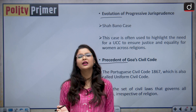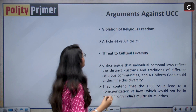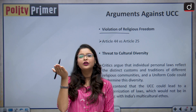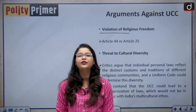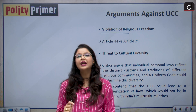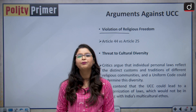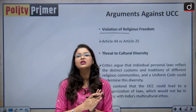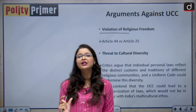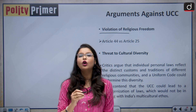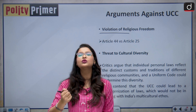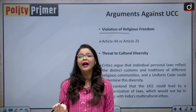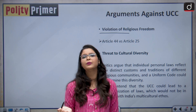Now let us see what arguments are raised against the Uniform Civil Code. The first argument is violation of religious freedom — critics argue that Article 44 is in violation of Article 25, which gives all citizens of India the right to freely practice, propagate and profess their own religion. However, this is not actually the case. What happened in the colonial era was that no religion wanted to lose their authority — neither the orthodox Hindus nor the Muslim clerics. That is why they associate UCC with religion so much, fearing they will lose their authority over practicing religious matters. That is why they oppose the implementation of the Uniform Civil Code.